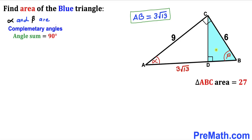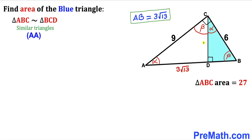Now let's focus on this blue shaded triangle BCD. It has the beta angle, this angle is 90 degrees, so this angle has got to be alpha. And since the whole angle at B is 90 degrees and part of it is alpha, this angle has got to be beta. Therefore we conclude that big triangle ABC is similar to blue shaded triangle BCD according to the angle-angle similarity theorem.